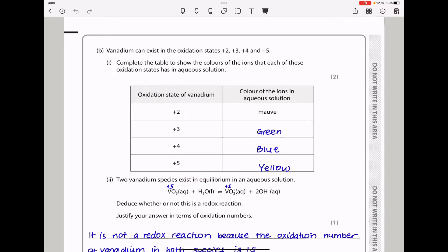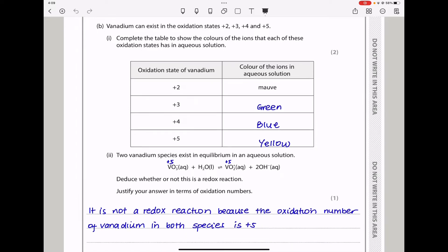Moving on. Part B says, vanadium can exist in the oxidation states plus 2, plus 3, plus 4, and plus 5. They say, complete the table to show the colors of the ions that each of these oxidation states has in aqueous solution. Vanadium 3 is going to be green. Vanadium 4 is blue, and vanadium 5 is yellow.